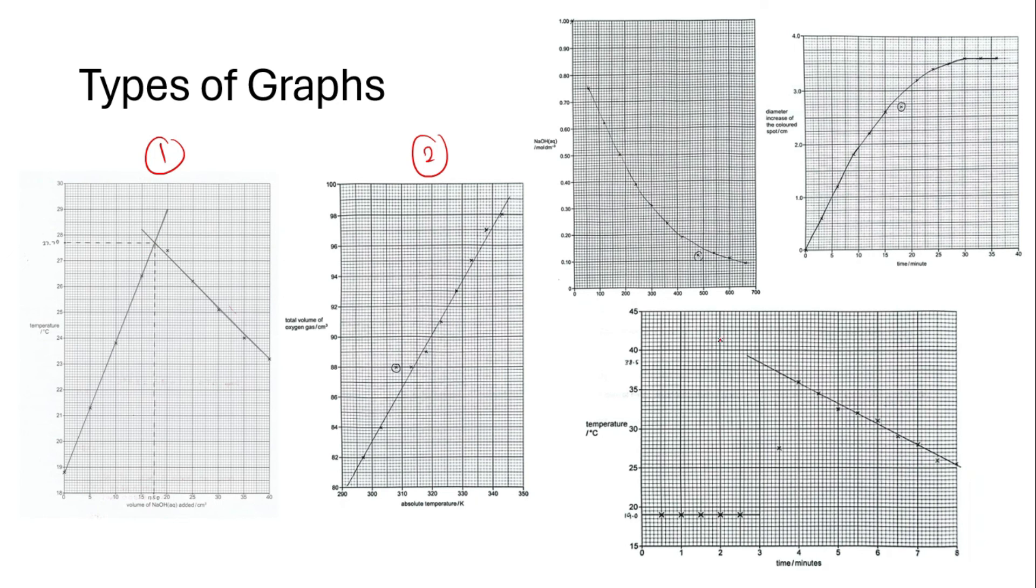Type number two is a very typical straight line graph. Type number three and four are curved line graphs with positive and negative gradients. And the last type will be a graph for measuring the gradient change before and after mixing the reactants. So, this is a graph where you should extrapolate both straight lines to the time where the reactants are mixed to find the energy.